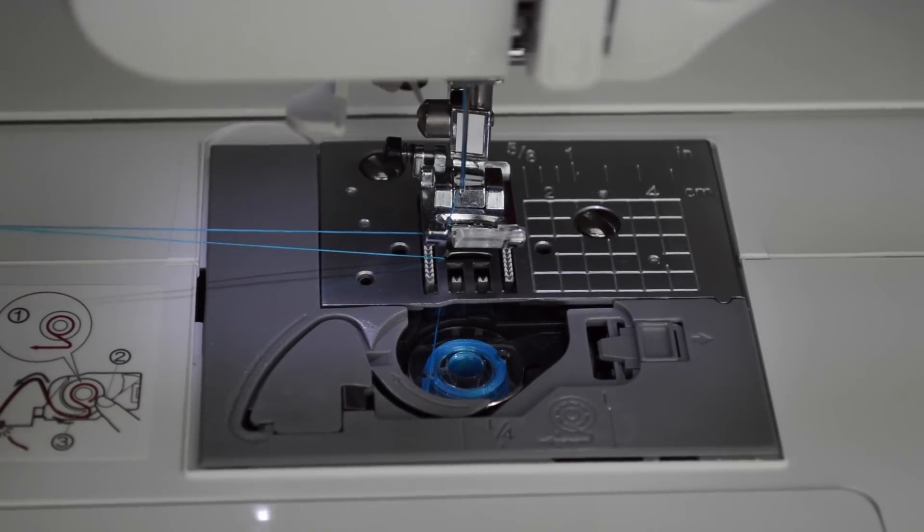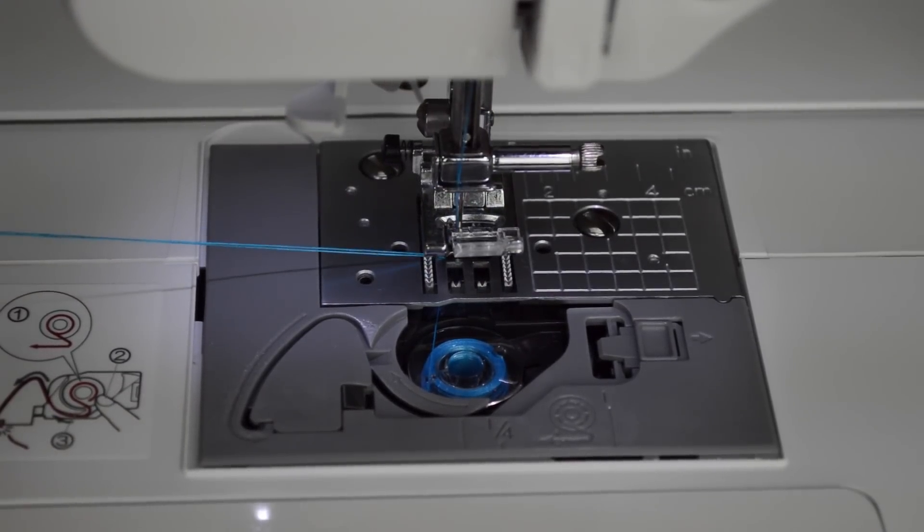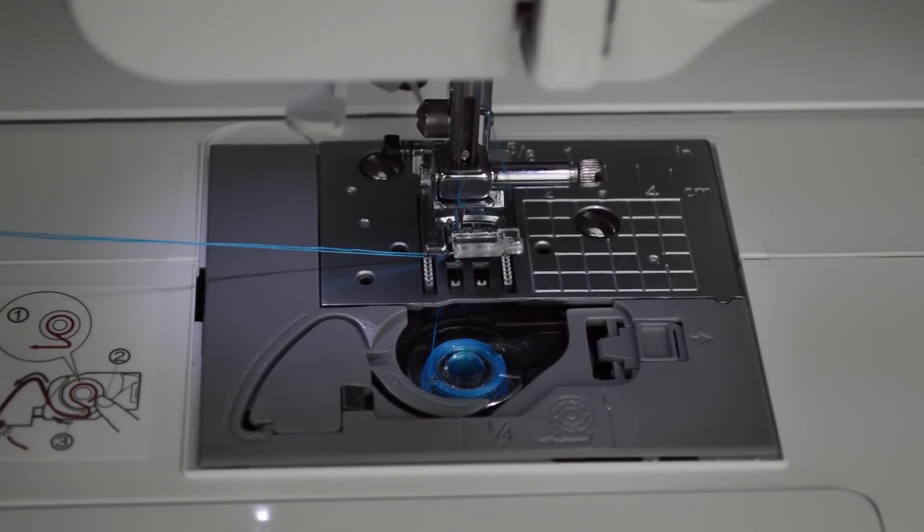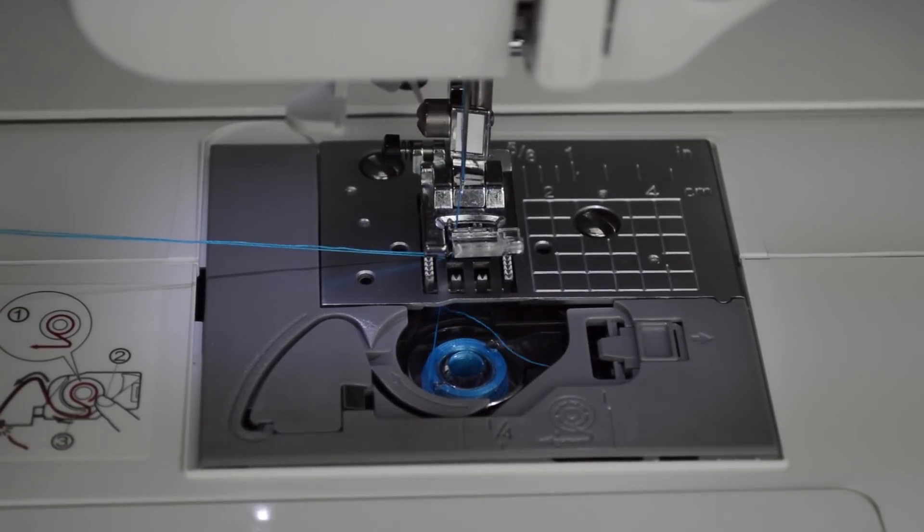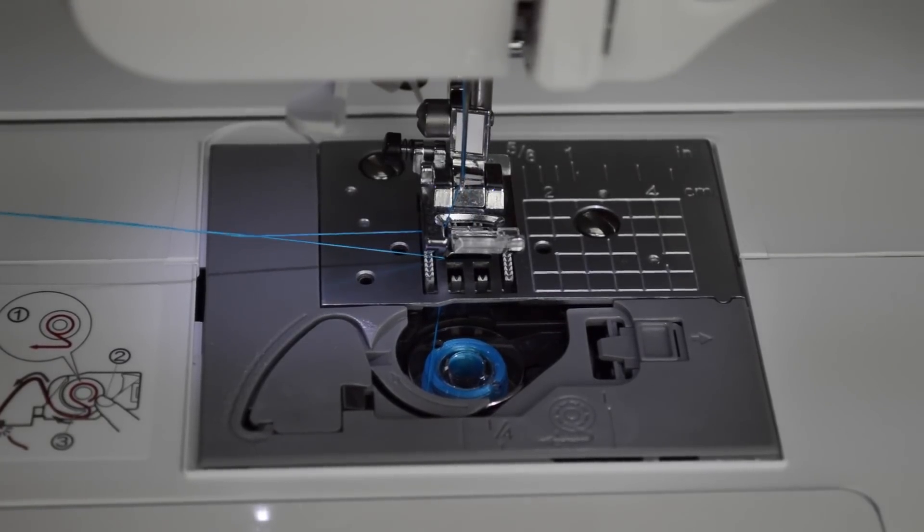Every time a stitch is made, the needle goes down. There's a hook down there that pulls the needle thread around and hooks it underneath the bobbin and brings that all the way back up.